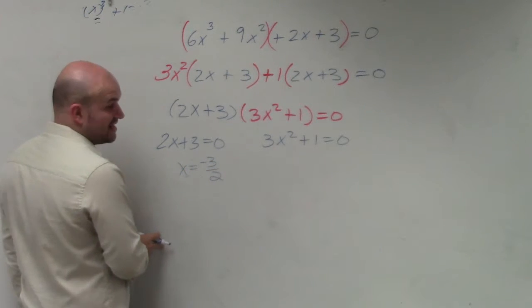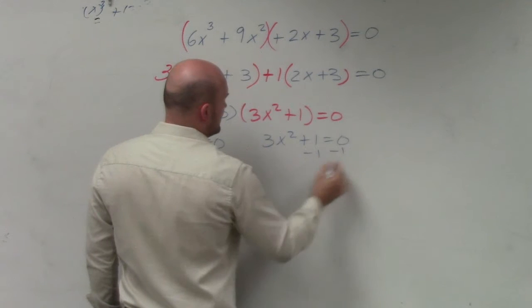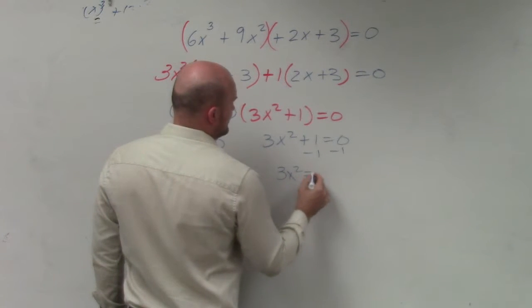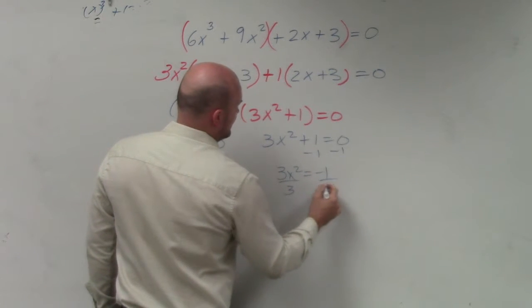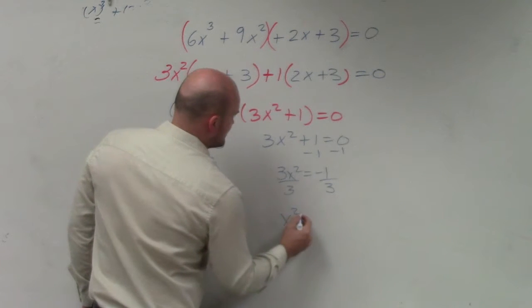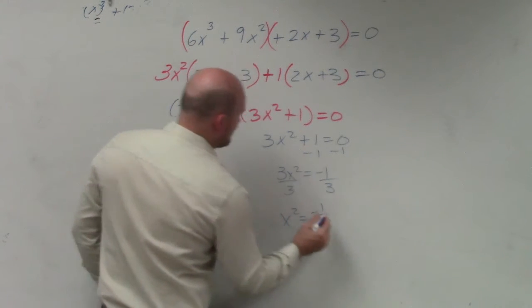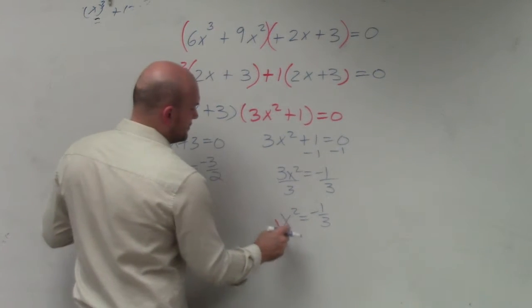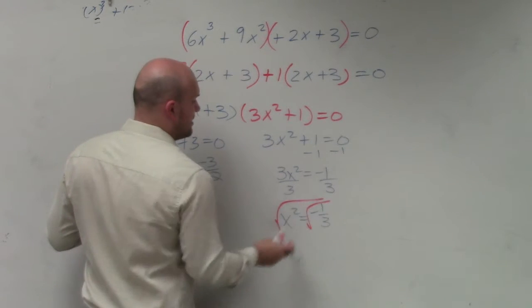This one's not as fun. So I subtract 1, I get 3x squared equals negative 1, divide by 3, x squared equals negative 1 third. Remember to get rid of the square root, or the squaring, you take the square root on both sides.